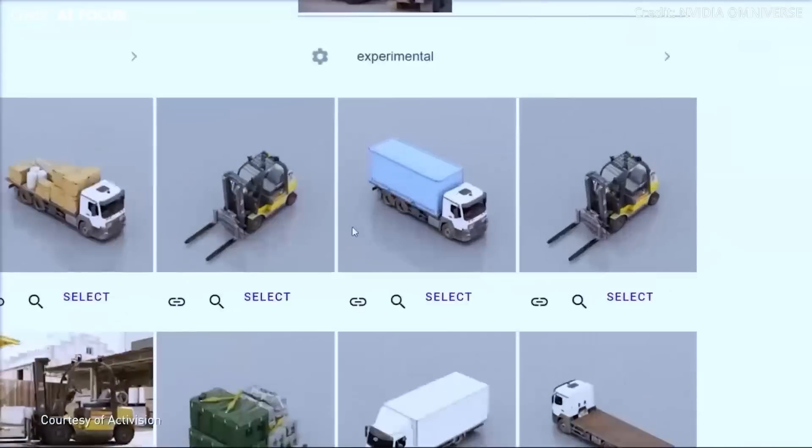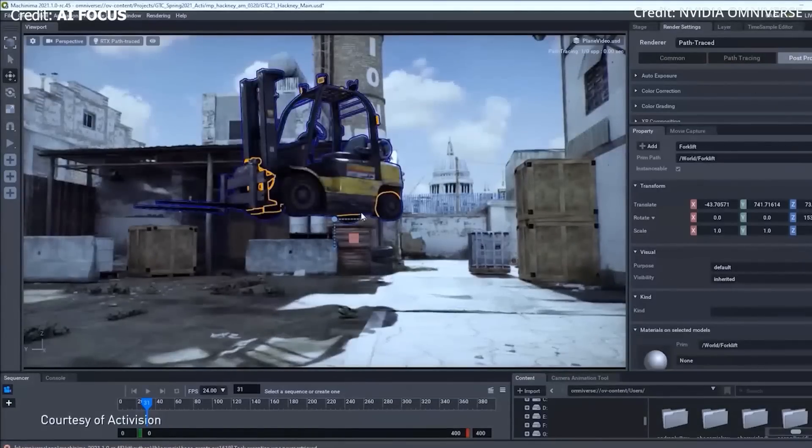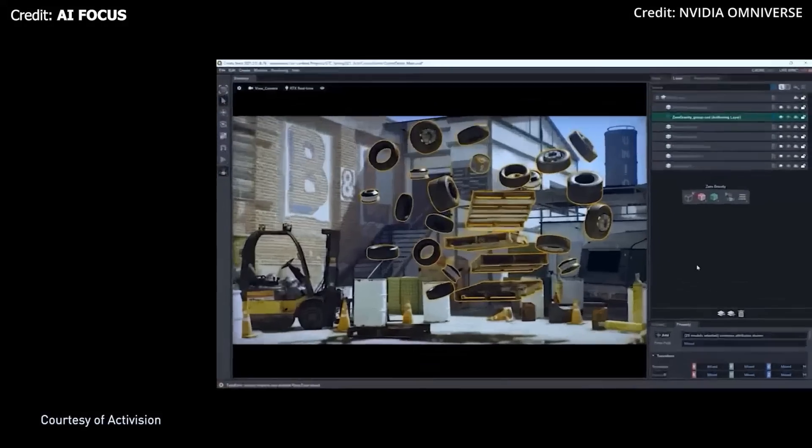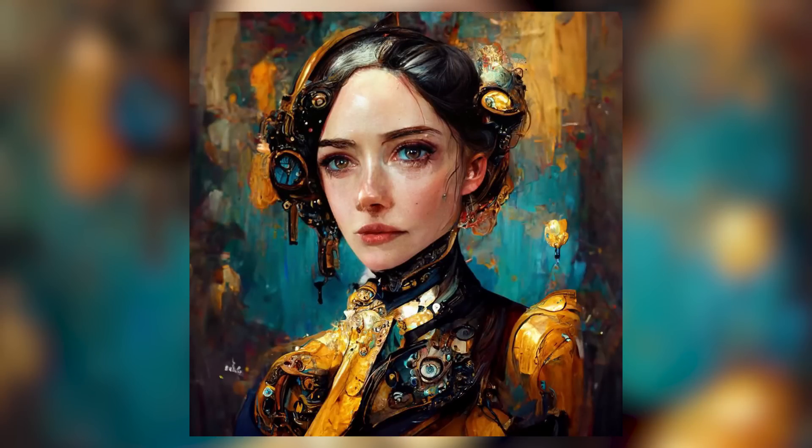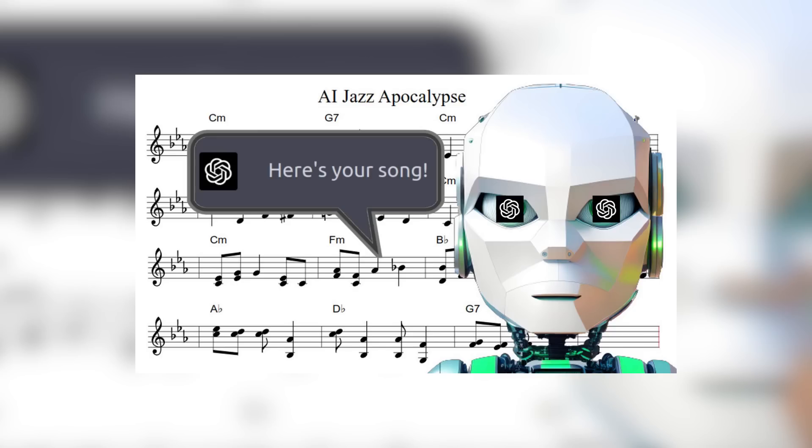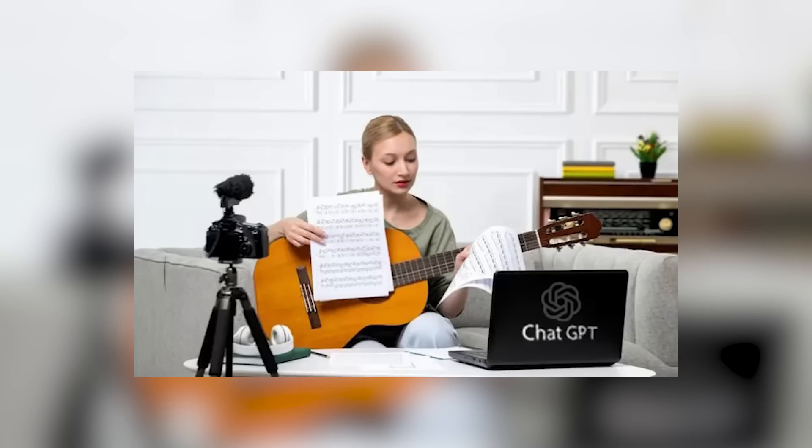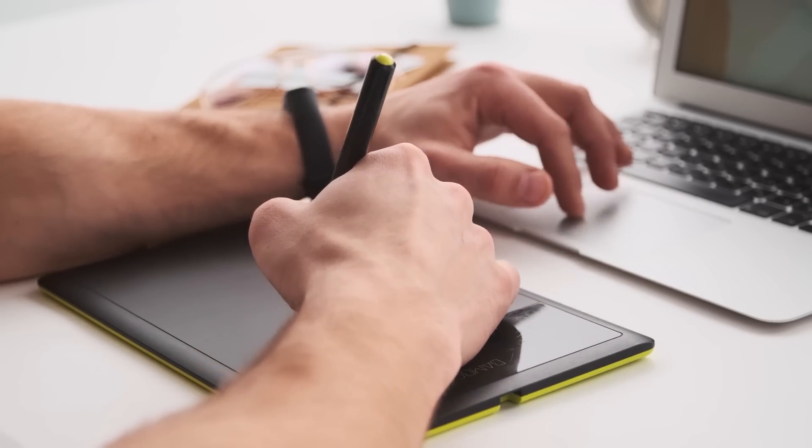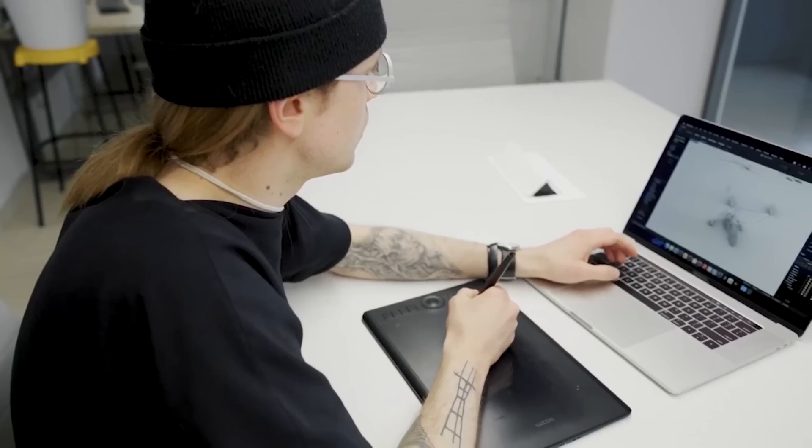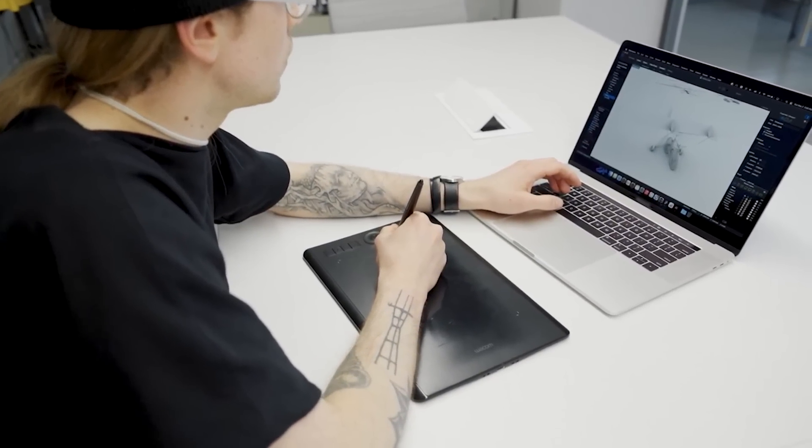Number four: Improved Creative Output. GPT-5 will push the boundaries of AI-generated creativity by incorporating advanced algorithms that allow it to produce more diverse and innovative content in various forms, such as writing, art, and music. It will be capable of understanding and mimicking different styles, techniques, and genres, enabling it to generate original and compelling content that aligns with users' creative preferences and intentions. Furthermore, GPT-5 will be able to collaborate with human creators more effectively, offering suggestions, ideas, and refinements that enhance the creative process. This synergy between AI and human creativity will open up new possibilities for artists, writers, and musicians to explore new forms of expression and expand the scope of their work.